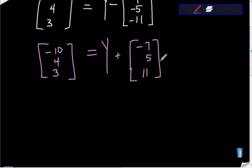So now what I'm going to do is subtract this matrix from each side. So if I subtract this matrix from itself, I'll get nothing, so I'll have y plus 0, which is just y. And then I'm going to take the left-hand matrix, negative 10, 4, 3.